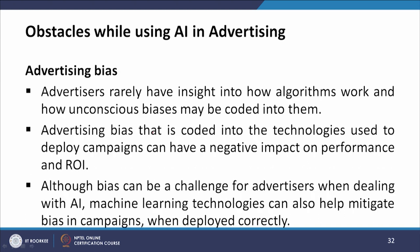The next obstacle is advertising bias. Advertisers rarely have insights into how algorithms work and how unconscious biases can be coded into them. Advertising bias coded into technologies used to deploy campaigns can have a negative impact on performance and return on investment. Although bias can be a challenge for advertisers when dealing with AI, machine learning technologies can also help mitigate bias in campaigns when deployed correctly.